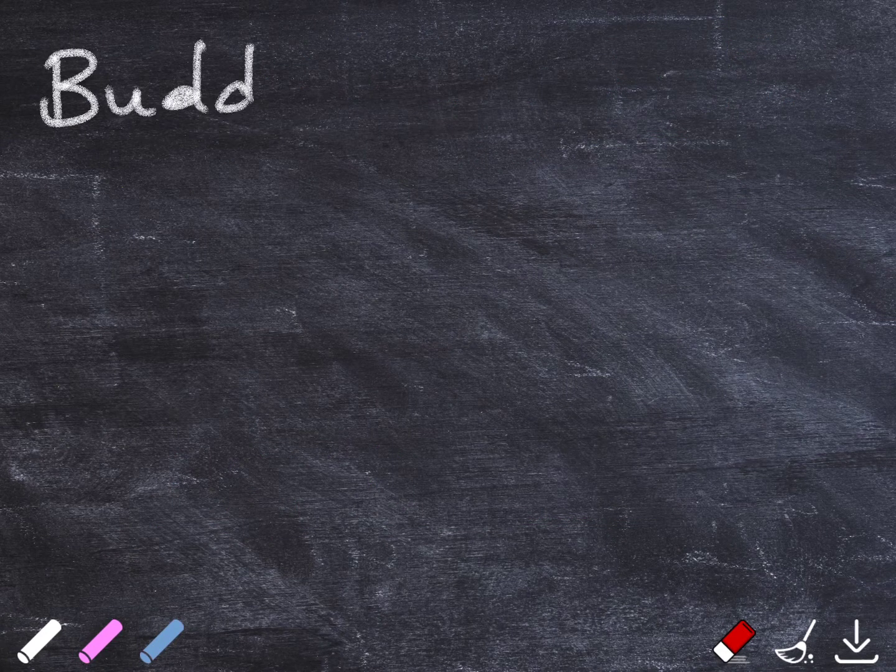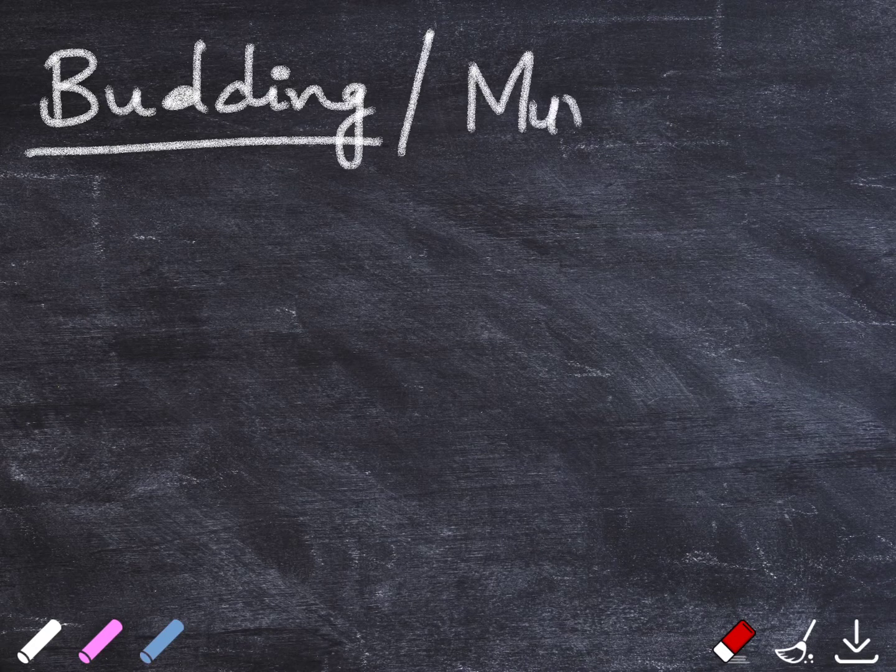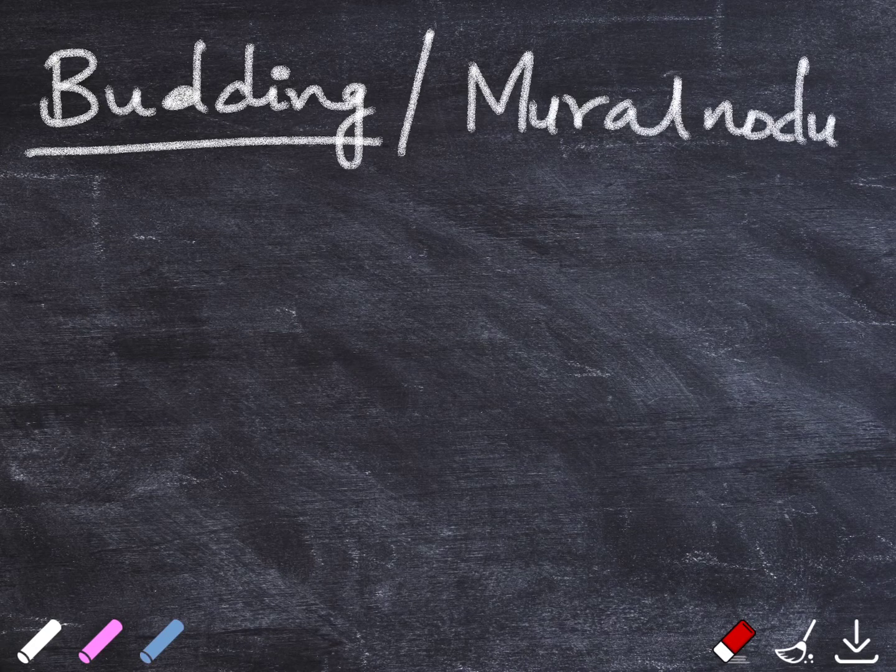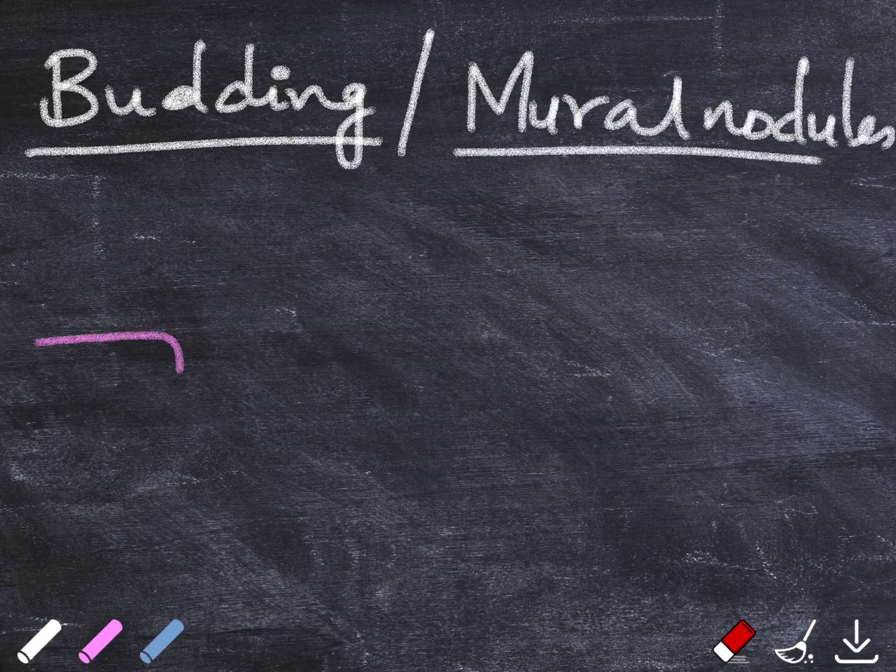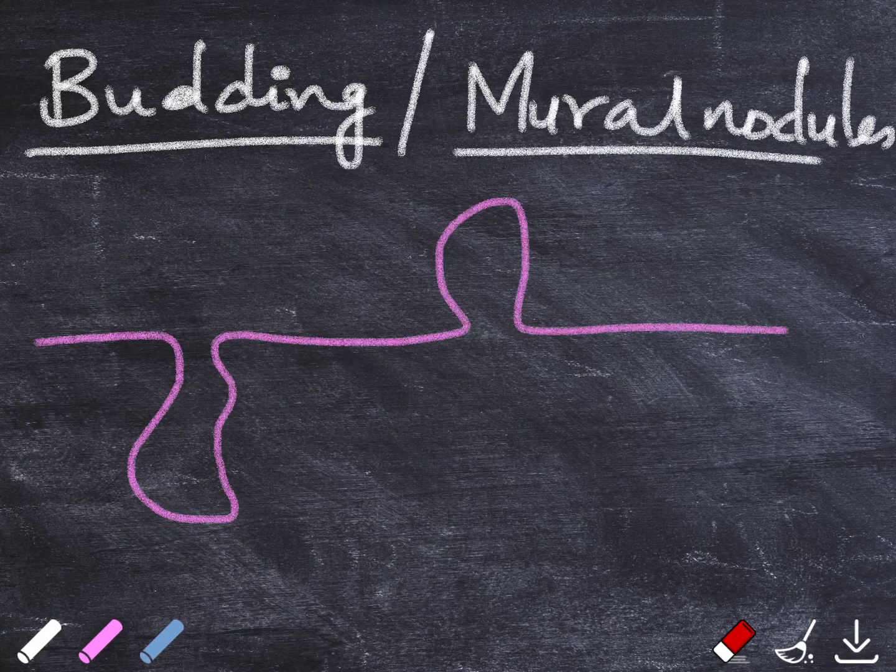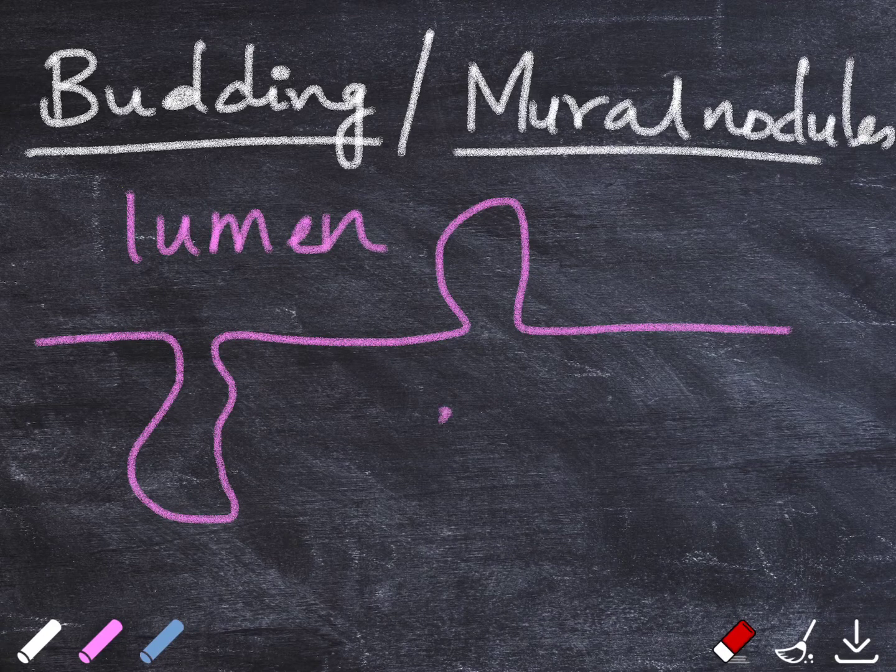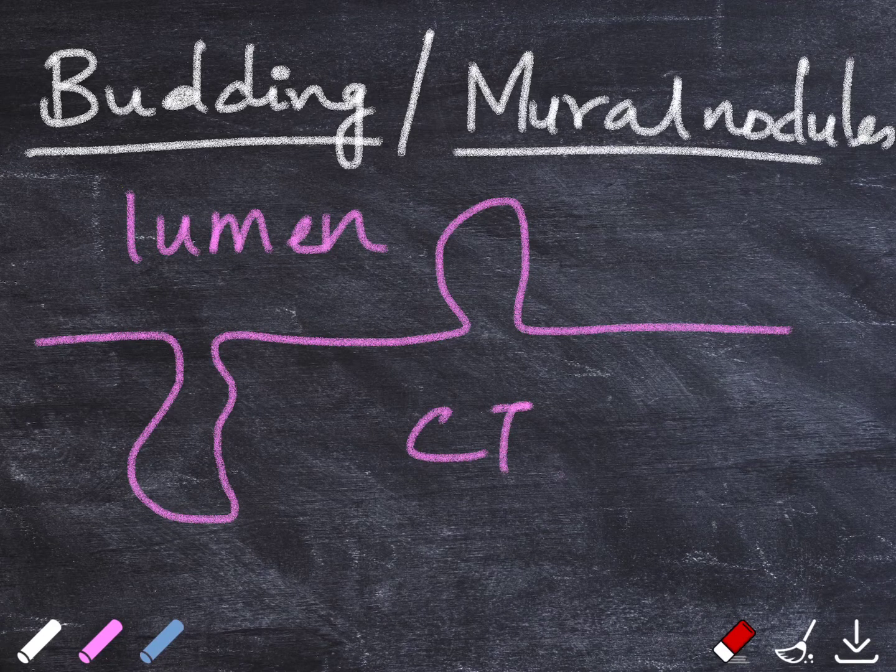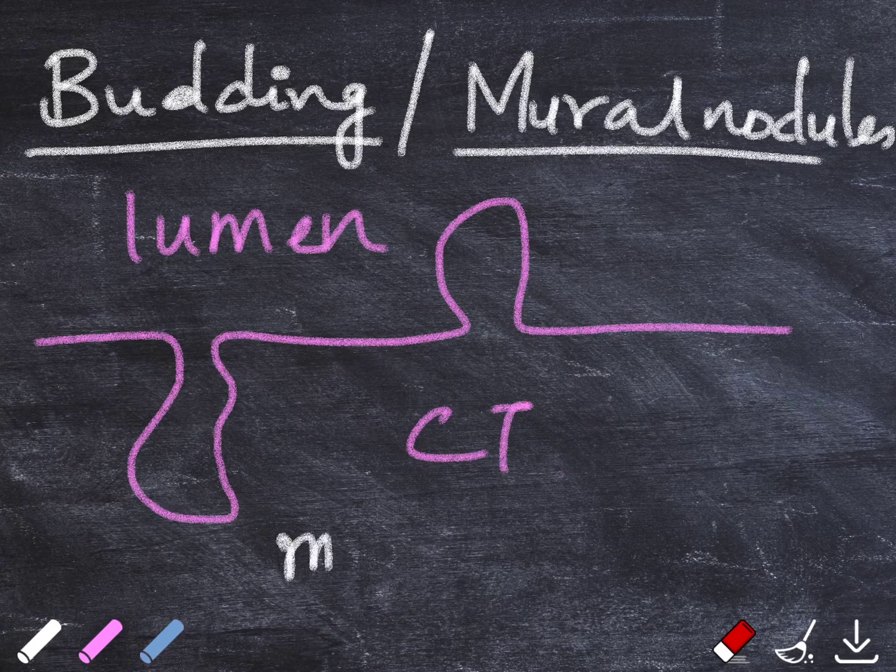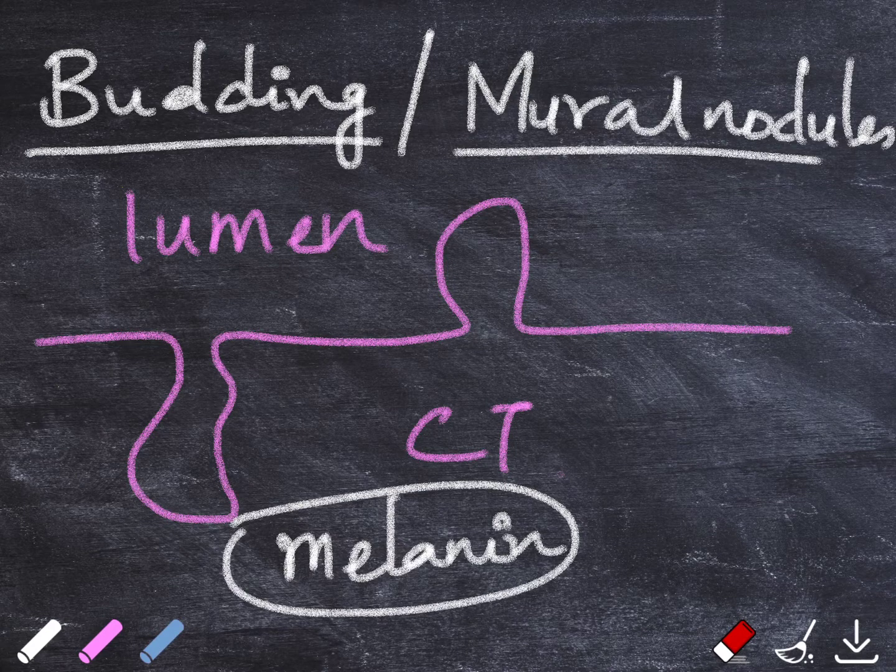The characteristic feature of this thing is the presence of budding or mural nodulations. What are these budding or mural nodulations? When the epithelium proliferates towards the lumen, it's a mural nodule. When it happens towards connective tissue, it is budding. Melanin deposition can also be evident in the lining epithelium.